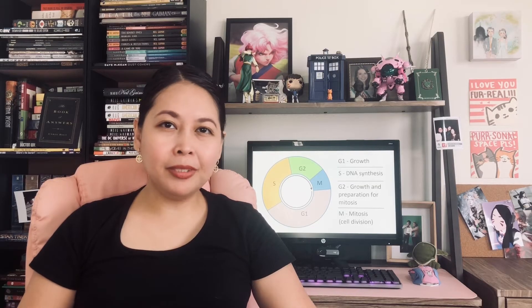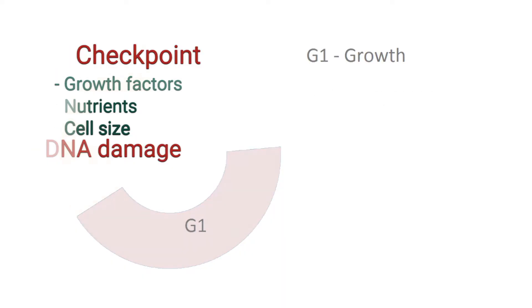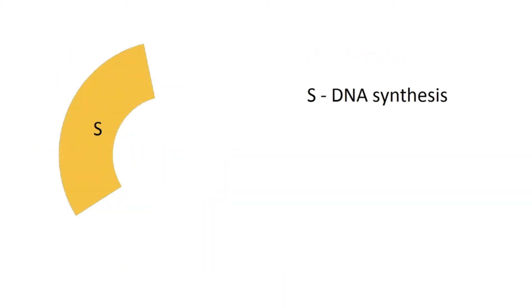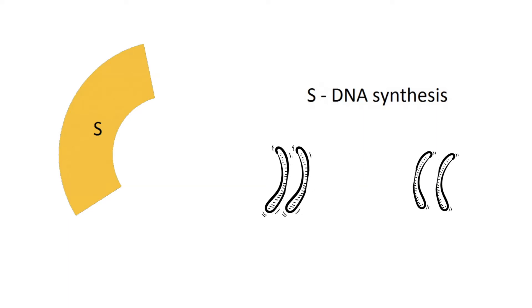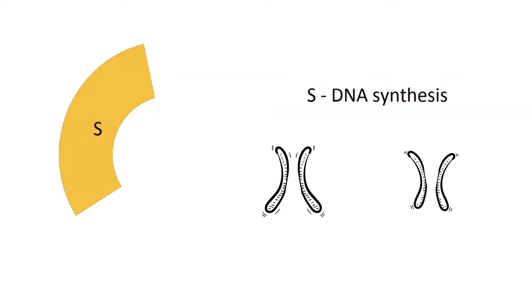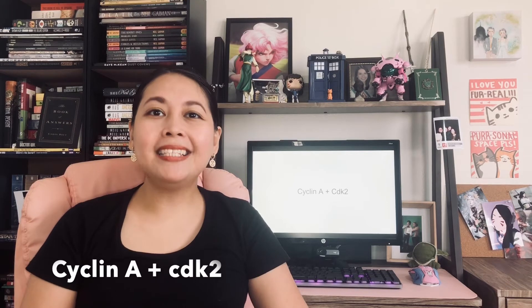If DNA damage is not present, the cell transitions to S phase. Here, DNA undergoes replication — the natural process of the DNA cloning itself. No protein synthesis occurs during this time because the cell needs to focus all of its energies on copying the DNA. Cyclin A and cyclin-dependent kinase 2 are needed for DNA replication to occur.